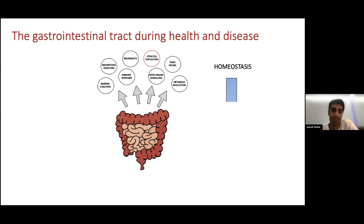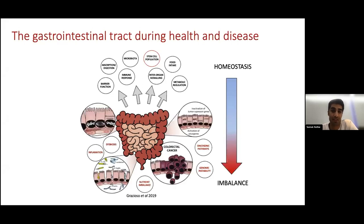However, defects to these processes often lead to a number of gastrointestinal diseases, which currently affect approximately 40% of the world's population. So understanding the mechanisms of how homeostatic imbalance arises and its implication for physiology is an important factor for furthering human health.